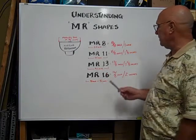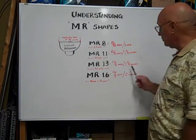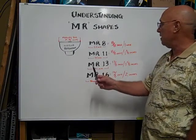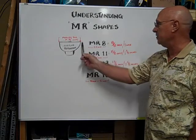The MR-13 is thirteen-eighths of an inch, or one-five-eighths inches in diameter, or forty-one millimeters across the diameter of the mirror reflector.